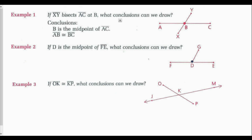If line segment XY is a bisector, then we could say that B is the midpoint of line segment AC, and line segment AB is congruent to line segment BC. Example 2: if D is the midpoint of line segment FE, what conclusions can we draw? The midpoint definition gives us that line segment FD is congruent to line segment DE, point D is a bisector of line segment FE, and line segment DG bisects line segment FE.